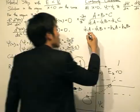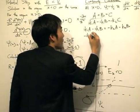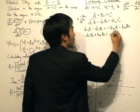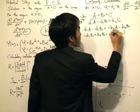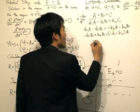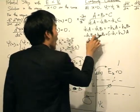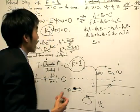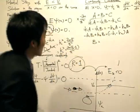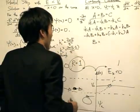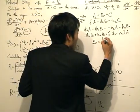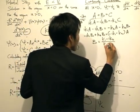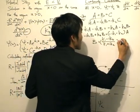Bringing b over to the left-hand side: minus ik₁b plus k₂b equals minus ik₁ minus k₂, all times a. Multiplying top and bottom by imaginary number i to get a nicer form — since minus i times i is positive — we get b equals (k₁ minus ik₂) divided by (k₁ plus ik₂), times a.